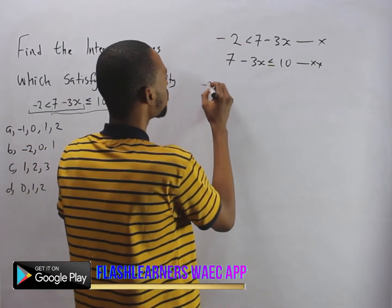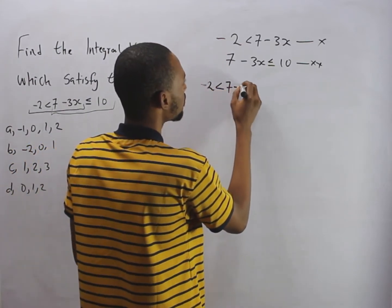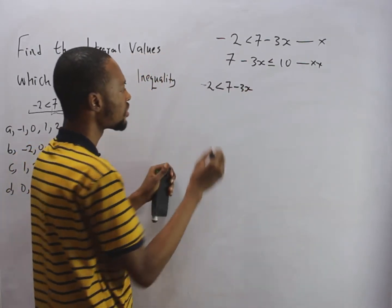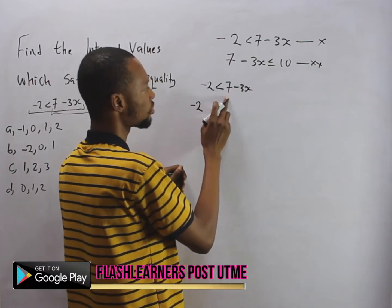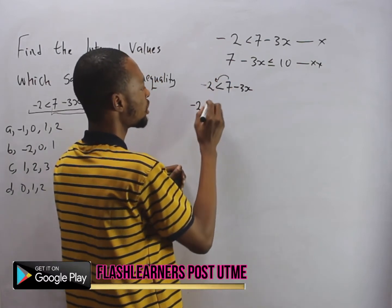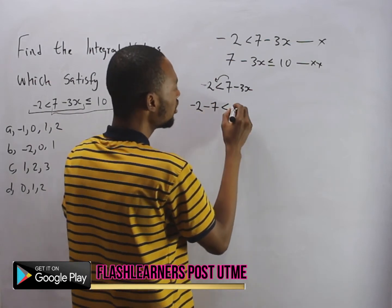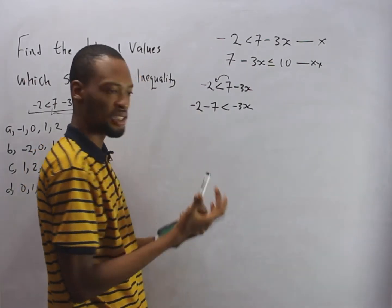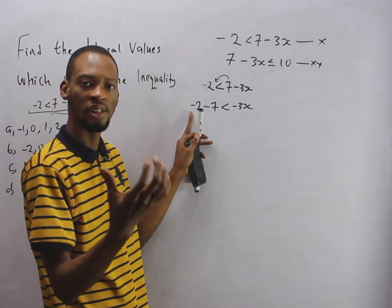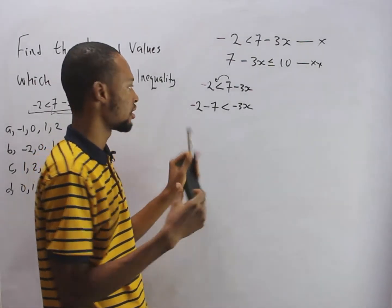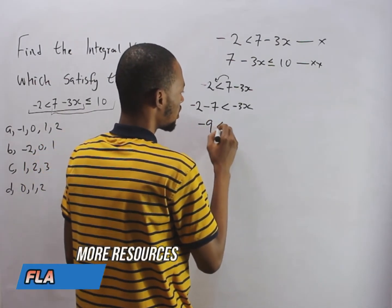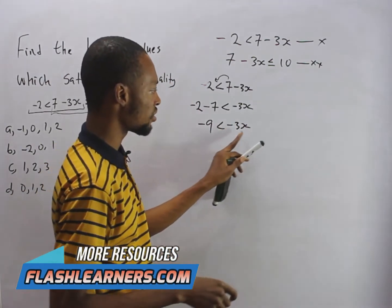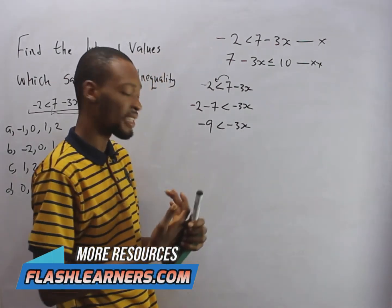Solving S1 first: since minus two is lesser than seven minus three s, we collect like terms. Seven crosses the inequality sign and becomes minus seven. So minus two minus seven is minus nine, because it's like you only have two and you borrowed another seven — you now owe nine. So minus nine is less than minus three s.